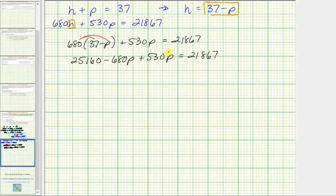Next, we isolate the p term by subtracting 25,160 on both sides. Simplifying, this simplifies to zero. So we have negative 150p equals 21,867 minus 25,160, which is equal to negative 3,293.